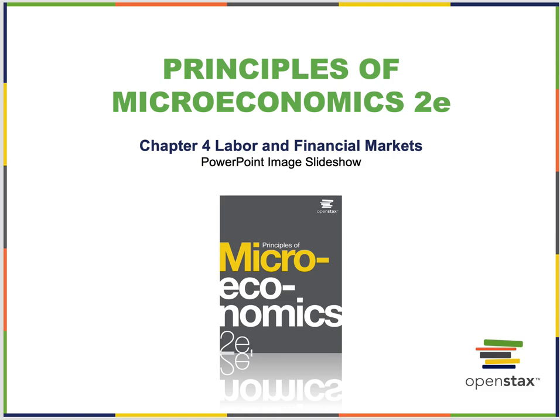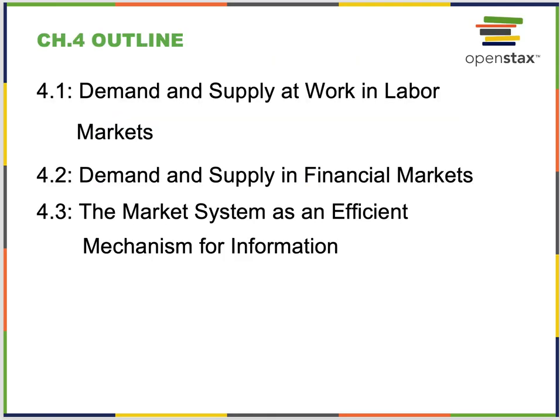We're going to cover Chapter 4 of the OpenStax textbook, Labor and Financial Markets. There are three sections: demand and supply at work in labor markets, demand and supply in financial markets, and the market system as an efficient mechanism for information.